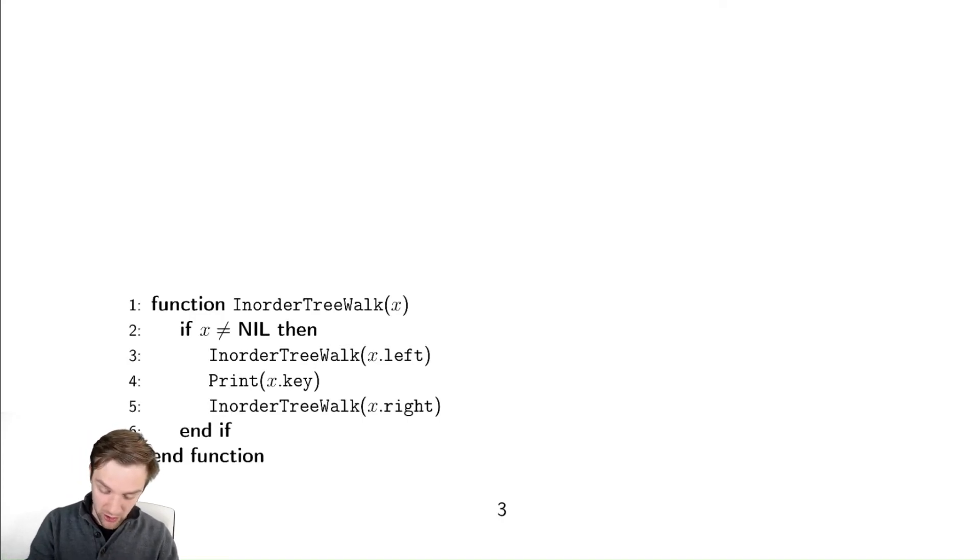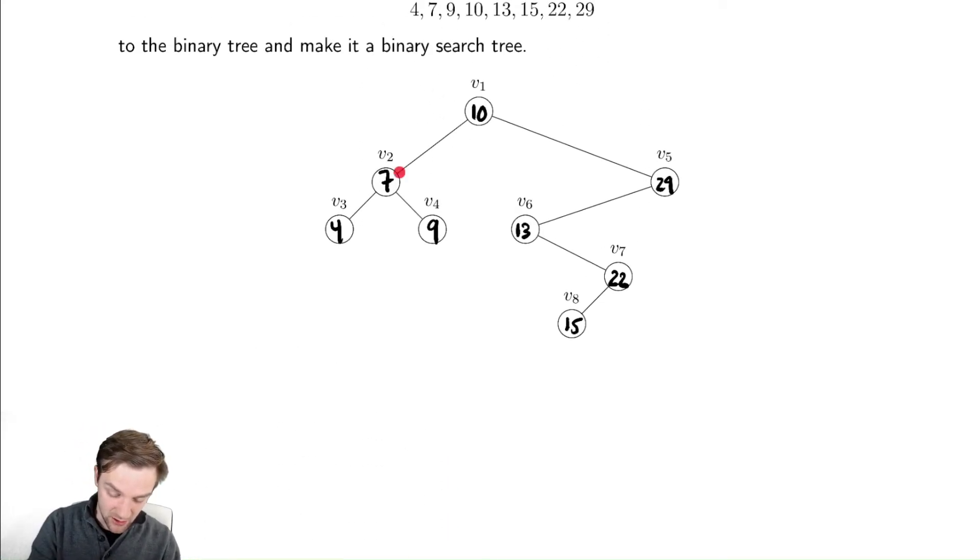So we're going to talk about the in order walk of a tree. The way we're going to do this is we're going to go to the left, then look at ourselves, then go to the right. Let's look at how I would go to the right from four. I can't go anywhere so I'm stuck. I go back up in my recursion tree and I print out seven. I then go to the right and print out nine. Nine has no children so I have to go back up. Seven is done now because I've gone to the left and to the right so I go back up. Ten has gone to the left so we print out ten.